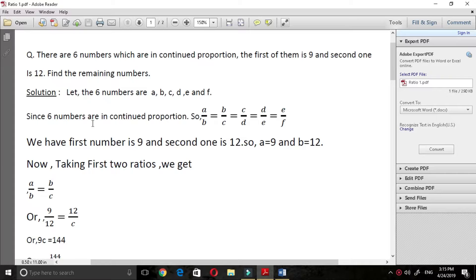Since 6 numbers are in continued proportion, according to the question, a by b is equal to b by c is equal to c by d is equal to d by e is equal to e by f. We have first number is 9 and second one is 12. So, let a is equal to 9 and b is equal to 12.